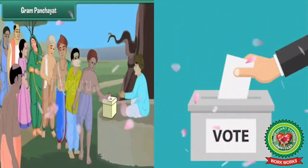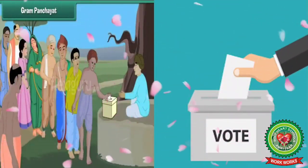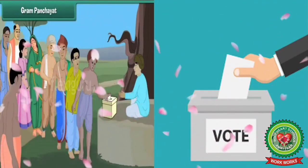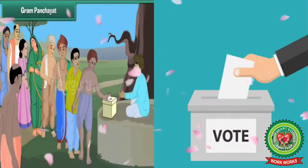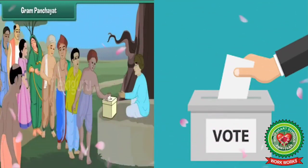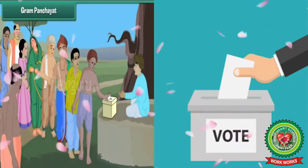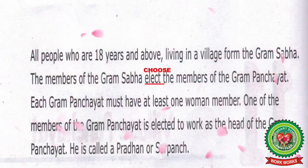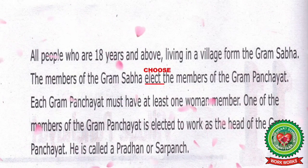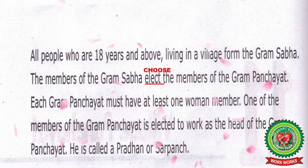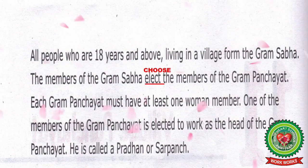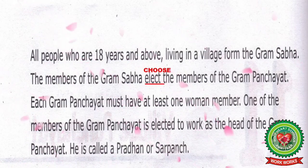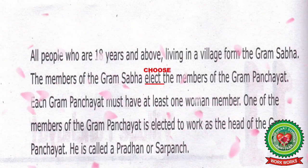The members of the village Panchayat are elected by the adults living in the village. A man or a woman who is more than 18 years of age is called an adult, and has the right to vote. Each Gram Panchayat must have at least one woman member. One of the members is elected as head of the Gram Panchayat, called the Pardhan or Sarpanch.